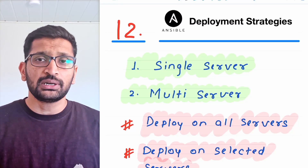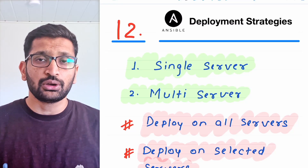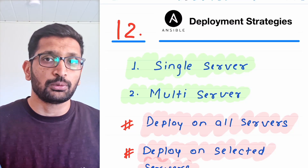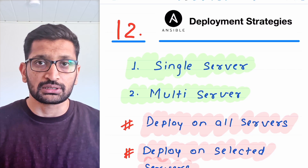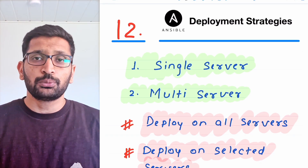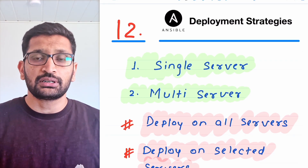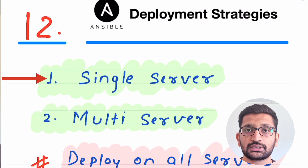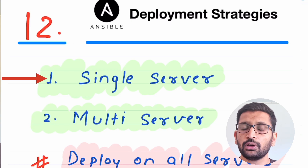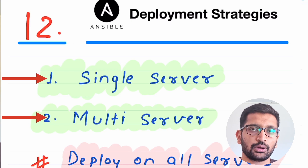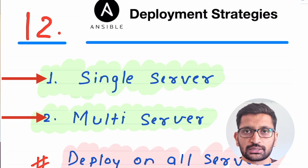There are various deployment strategies when you are using Ansible to automate your deployment processes, but on a very high level you can put the deployment strategies into two categories: one is the single server deployment and second is the multi-server deployment for Ansible.